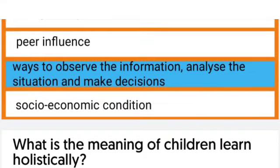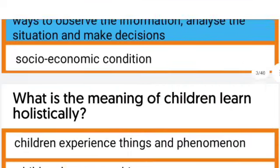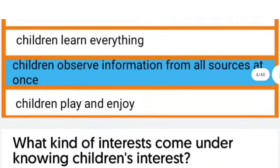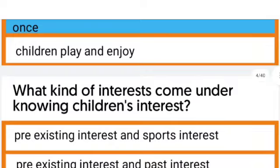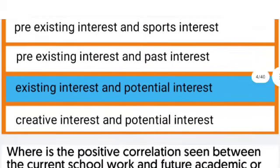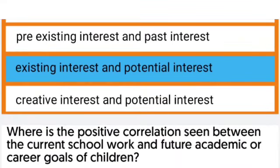The next question: What is the meaning of 'children learn holistically'? The right answer is children observe information from all sources at once. The next question: What kind of interest comes under knowing children's interest? The right answer is existing interest and potential interest.